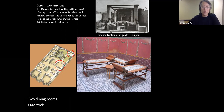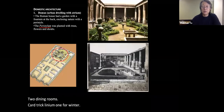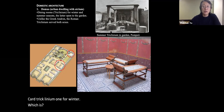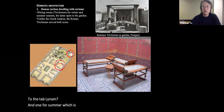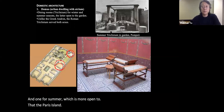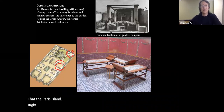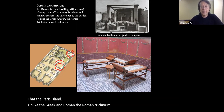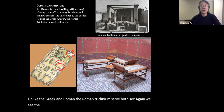There were two dining rooms called the triclinium — one for winter, located just next to the tablinum, and one for summer, which was more open to the peristyle. Unlike the Greek andron, the Roman triclinium served both sexes. Again, we see the greater gender equality in Roman society. The Romans, like the Greeks, reclined on seats, and the rooms were highly decorated with paintings, mosaics, and floor decorations.